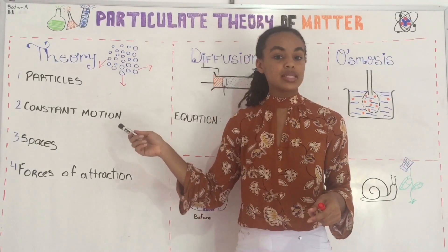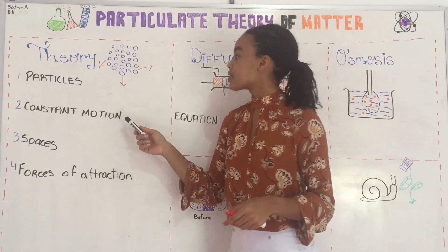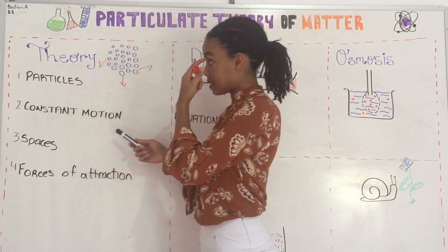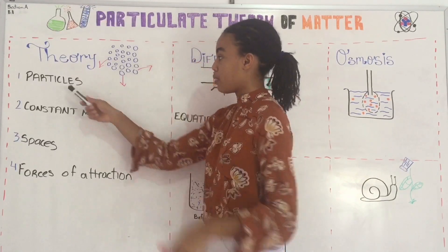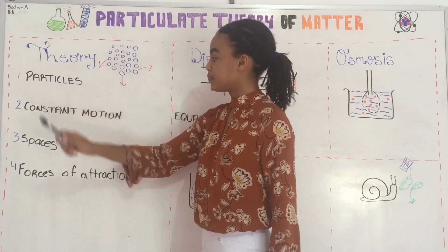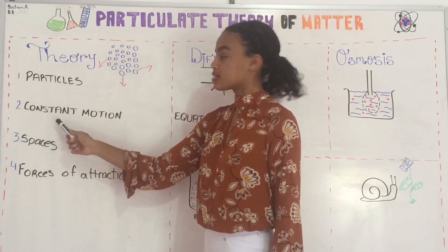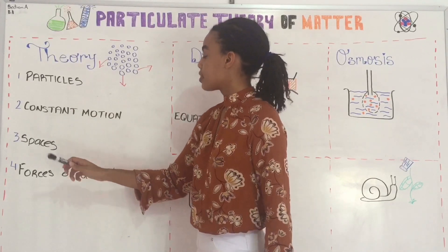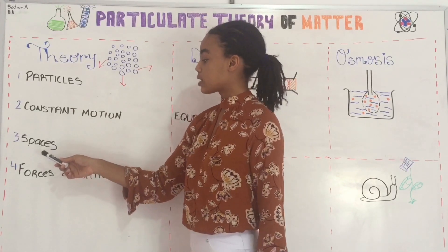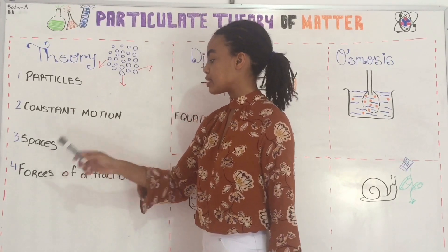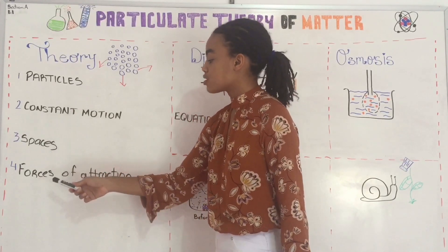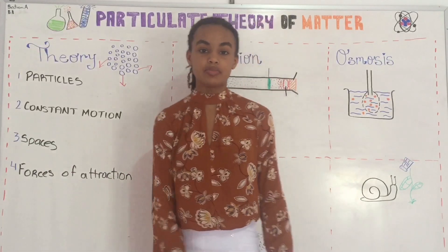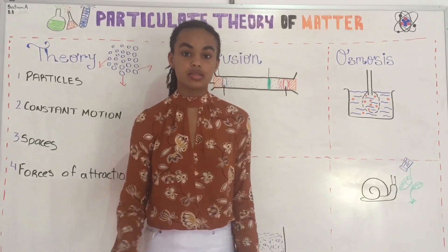So to summarize the particulate theory of matter: it states that matter is made up of particles, these particles are in constant motion, there are spaces between these particles, and there are also forces of attraction exerted between these particles.